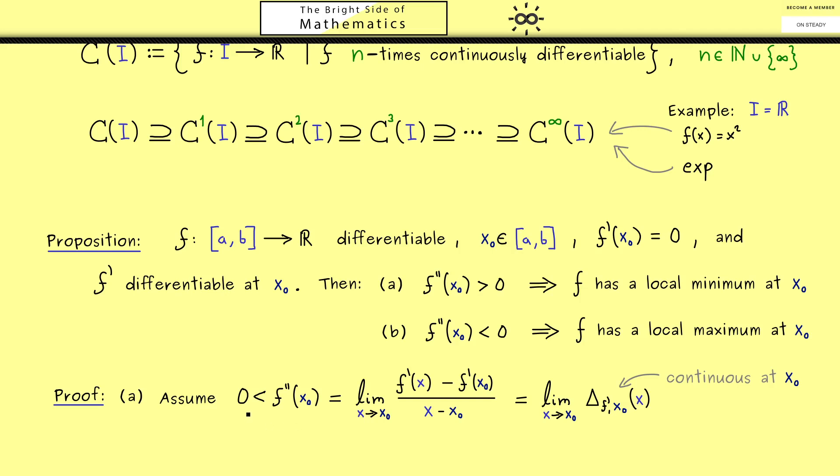So in summary we have a continuous function that is positive at the point x0. Hence we can conclude there is a whole neighborhood of the point x0 where the function is positive. So let's simply call this neighborhood u as a subset of the interval ab, and then we know the value of the function in this neighborhood is also positive. Now we can use that this delta function here is given as the difference quotient, and that we know f' of x0 vanishes.